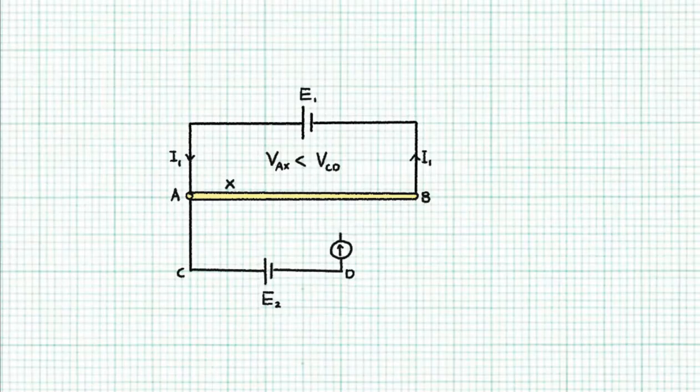Now suppose we are going to tap the jockey too far left such that VAX is smaller than VCD. So what happens when we do make the tap? Now something must happen because if nothing changes, then VAX is going to be smaller than VCD, which is not possible because they are now connected together.